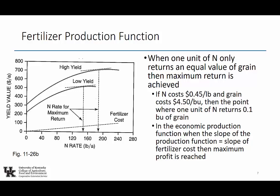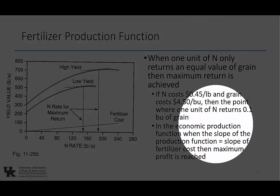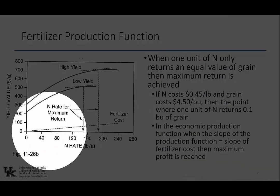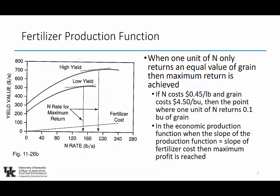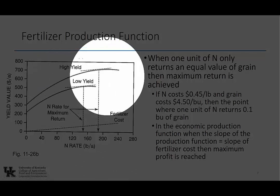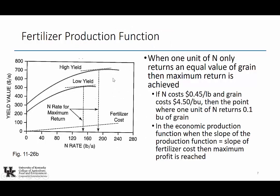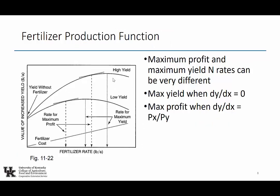When one unit of nitrogen only returns an equal value of grain, we've hit the maximum return on nitrogen — that's our economic optimum nitrogen rate, or EONR. If nitrogen costs 45 cents per pound and grain costs $4.50 per bushel, then the point where one unit of nitrogen returns one-tenth of a bushel is our economic optimum, because one-tenth of a bushel is worth 45 cents. That's the same point when the slope of the production function equals the slope of the fertilizer cost — when this line is parallel to that dashed flat line.